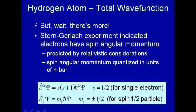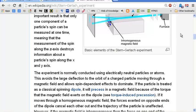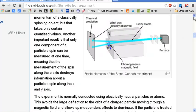So there is more. Wait, there is more. There was an experiment back in the early 1920s by Stern and Gerlach, which indicated that electrons have what is known as spin angular momentum. So what was this experiment that they did? Well, here it is from the Wikipedia article.